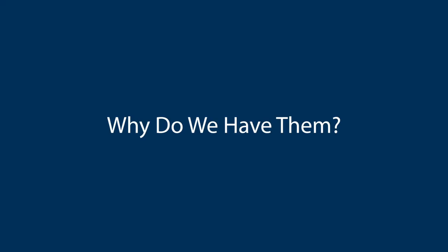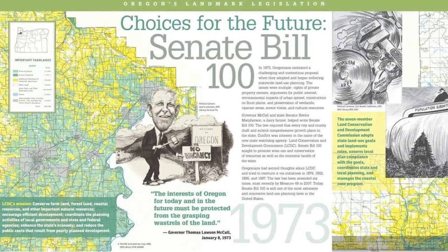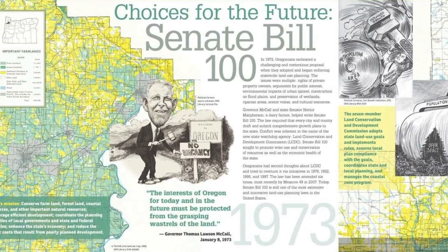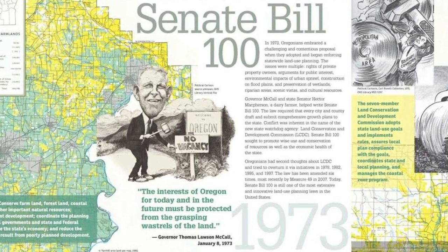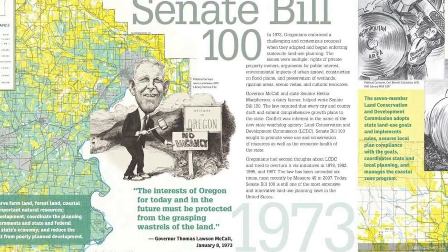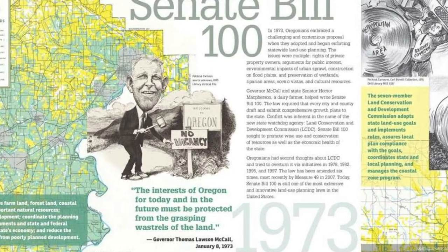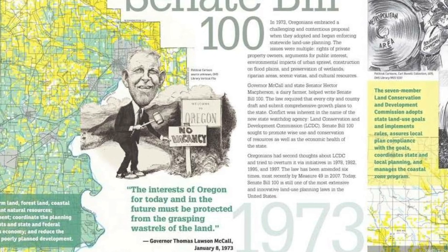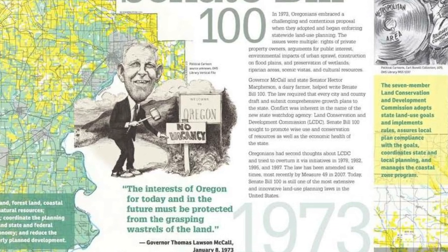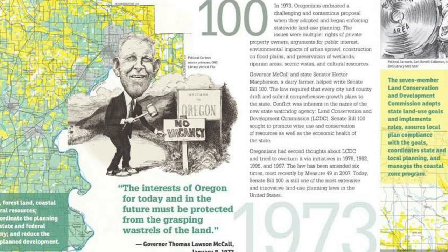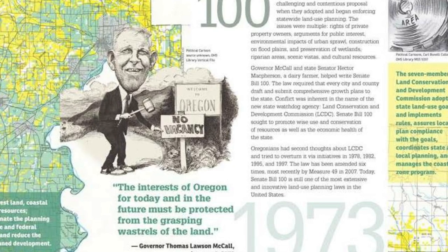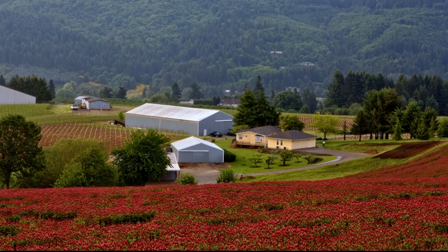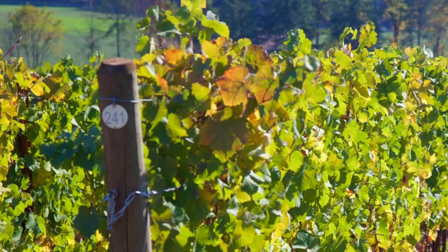In Oregon in the 70s, there was a fear that people were moving here so fast that Oregon was going to turn into a different type of state — maybe a fear of turning into California. So the governor at the time, Governor Tom McCall, and other state legislators came together and adopted Senate Bill 100, creating our state land use system.